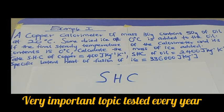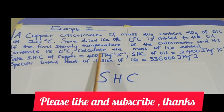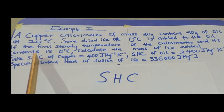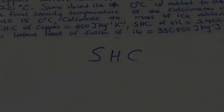Let's start with this question: a copper calorimeter of mass 30 grams contains 50 grams of oil at 20 degrees Celsius. Some dried ice at zero degrees C is added to the oil. If the final steady temperature of the calorimeter and its contents is zero degrees C, calculate the mass of ice added. Take specific heat capacity of copper to be 400 J/kg/K, specific heat capacity of oil 2400 J/kg/K, and specific latent heat of fusion of ice 336,000 J/kg.